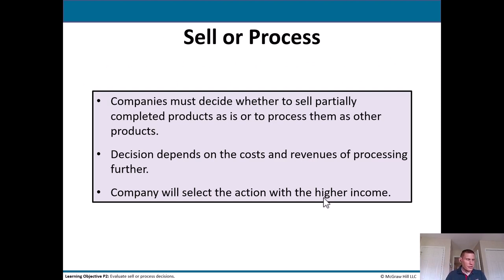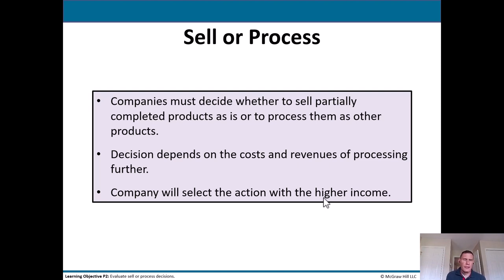The next type of managerial decision is what we call sell or process analysis. Companies must decide whether to sell partially completed products as-is or to process them further. The decision depends on the costs and revenues of processing further, and the company will select the action with the higher income.